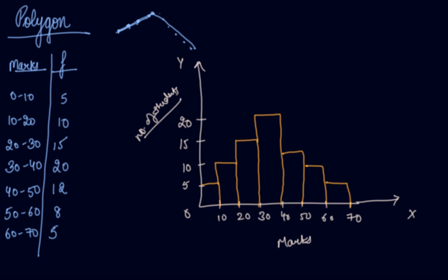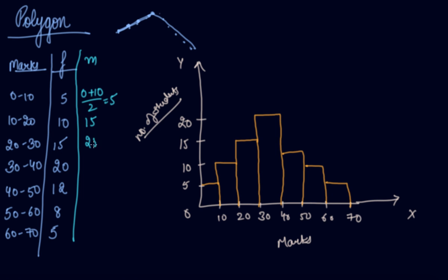Now if you have to make the polygon, take a pencil and scale and mark the midpoints of these class intervals. Calculate the midpoints using: lower limit plus upper limit divided by 2. That gives us 5, then 15, 25, 35, 45, 55, and 65.